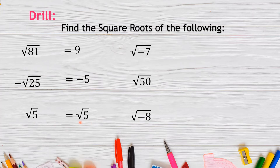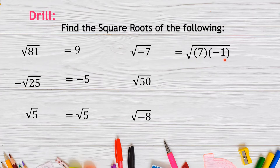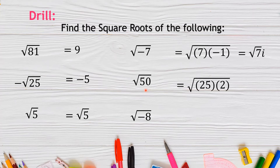What if we have a negative number under the radical sign? For √(−7), we factor out −7 as 7 × (−1). The square root of −1 equals i, which means it is an imaginary number, so the answer is i√7. For √50, we factor out 50 as 25 × 2. We extract the square root of 25, which is 5, giving a final answer of 5√2.